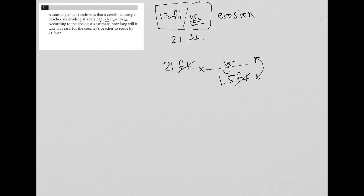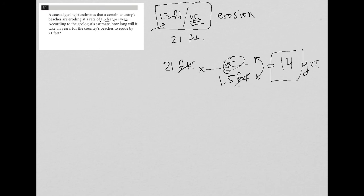You can always flip-flop information like this. So now my feet will cross out. I end up with years in my answer, which is exactly what I want. Then I just go to my calculator and say, what is 21 divided by 1.5? What I find is that is 14. So it'll take 14 years. The answer is 14.